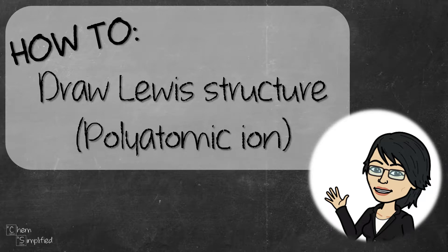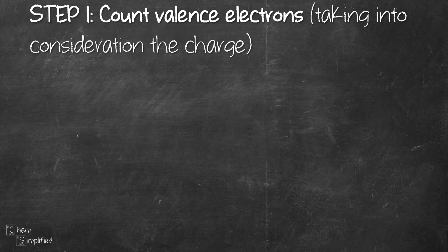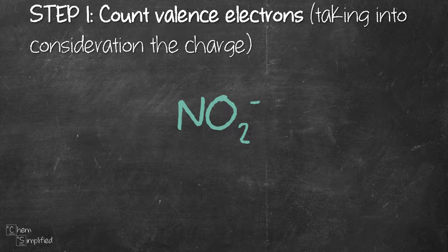In this video, we're going to draw the Lewis structure for polyatomic ion in five easy steps. First let's start by counting the valence electrons. We're using nitrite ion NO2- as our example. Nitrogen has five valence electrons and oxygen has six. So we add them up.